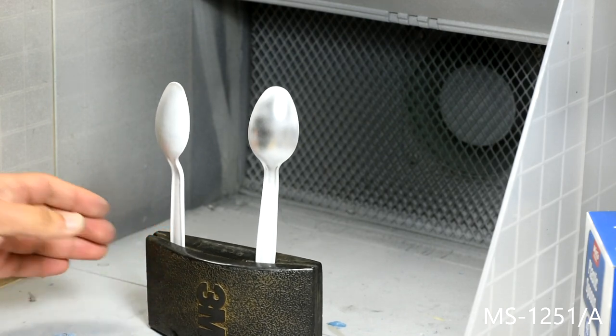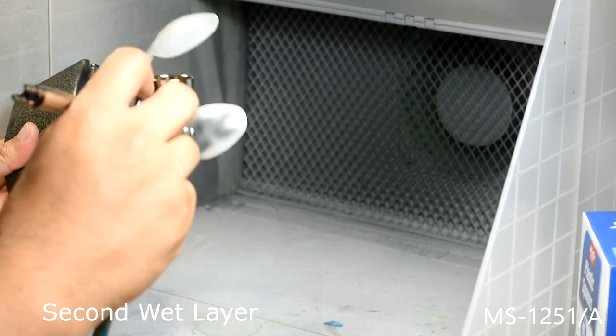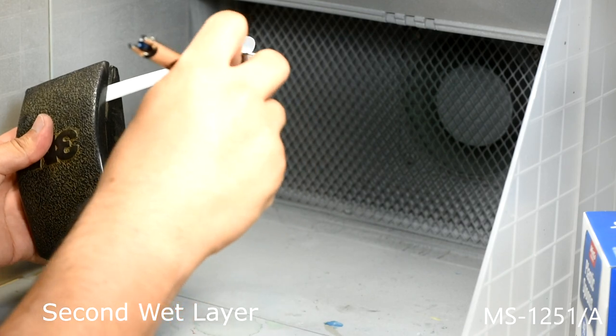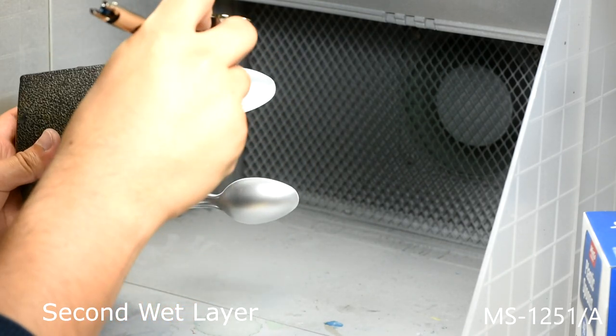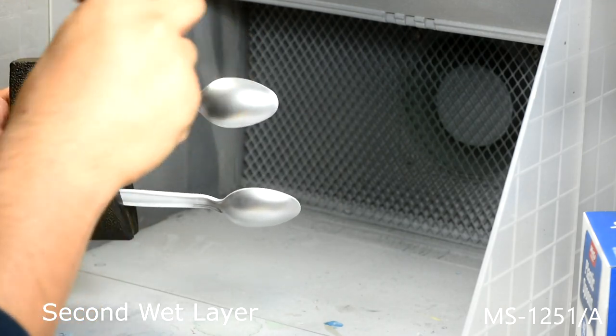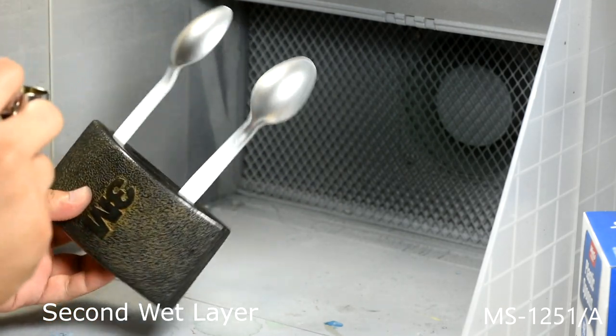I let this tacky layer of paint dry for a couple of minutes before starting the following layer. This layer will be wetter than the first one and my goal is for even coverage across the surface. I let this layer dry for about five minutes before spraying the following layer.